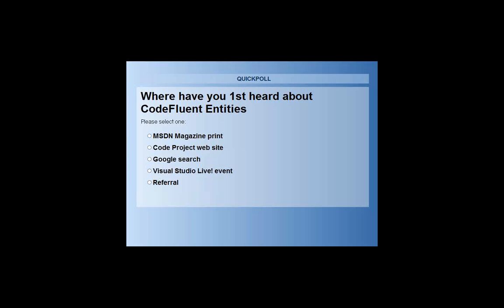The demonstration will be in three stages. The first one, we're going to start developing an application from scratch. Then the second demonstration will show the same application with several different out-of-the-box producers configured to show you what we can generate using CodeFluent Entities. The last demonstration will import an existing Access database into CodeFluent Entities, to show you how to migrate existing applications into new .NET applications.